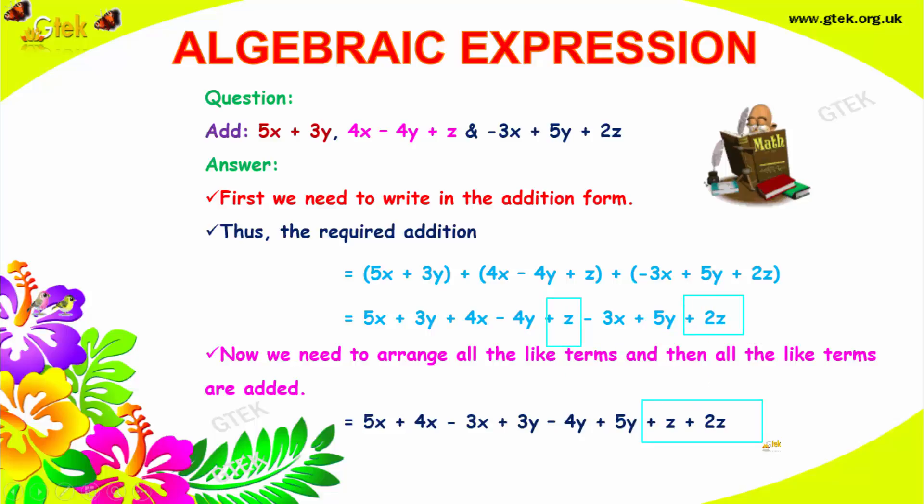And afterwards, the final answer is 5x plus 4x minus 3x, that's 6x. 3y minus 4y plus 5y: 3 plus 5 is 8, minus 4, it's 4y. z plus 2z, that's 3z.